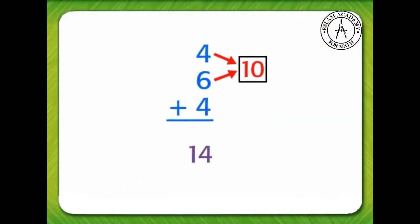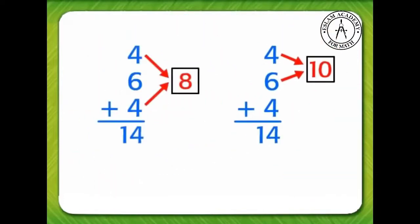No matter how you group the addends, the sum of 4 and 6 and 4 is 14.